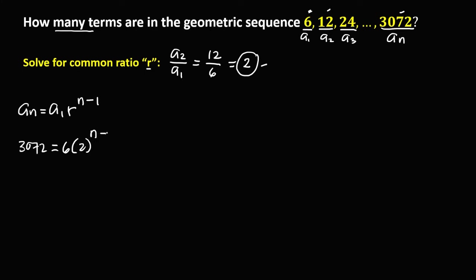Simplifying, divide both sides by 6. Cancel the 6s.